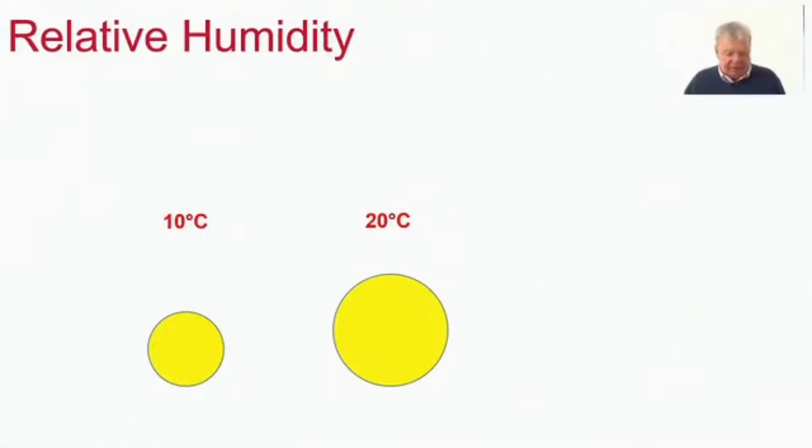A lump of air on the left is able to hold that amount of water vapour. Okay, the yellow circle represents the amount of water vapour it can hold at 10 degrees. At 20 degrees it can hold a bit more, and at 30 degrees it can hold more still.